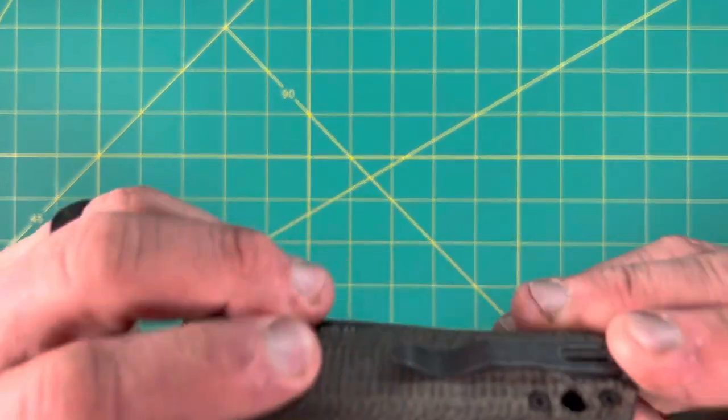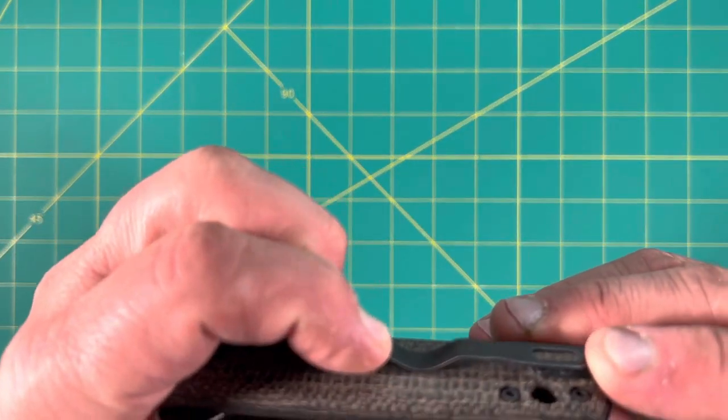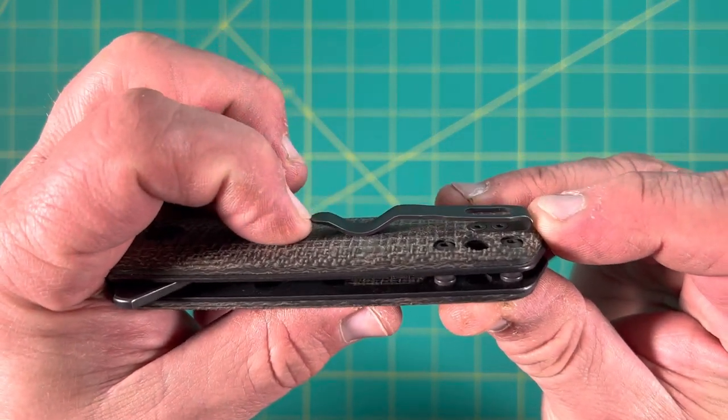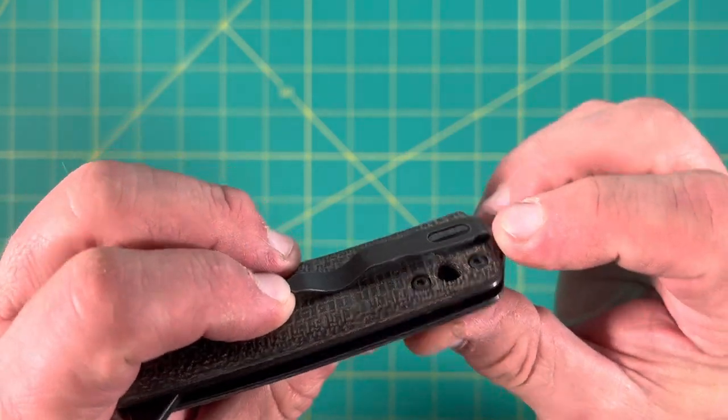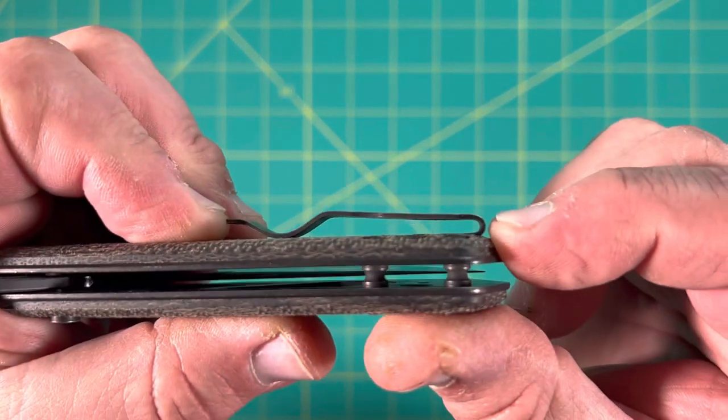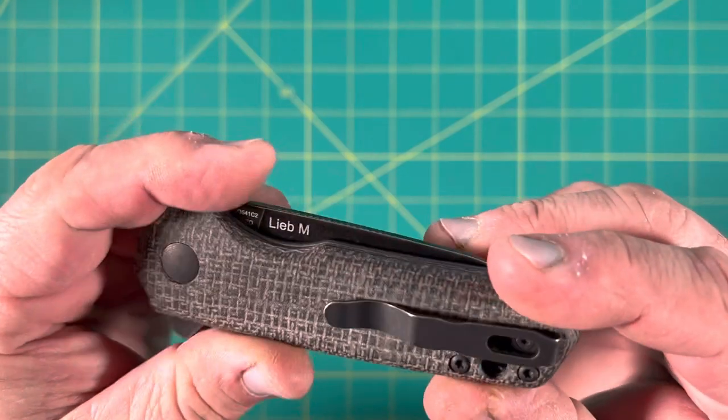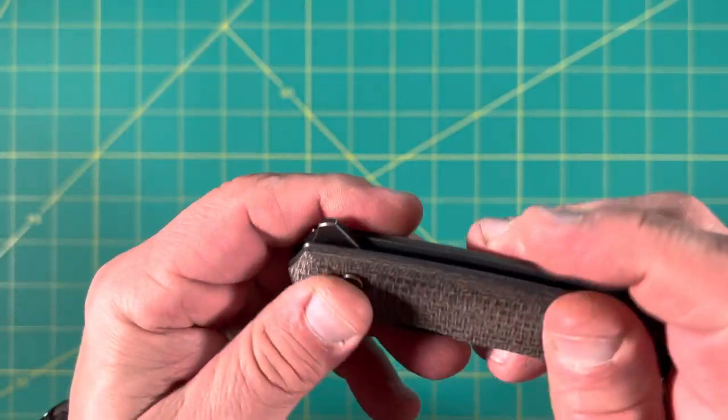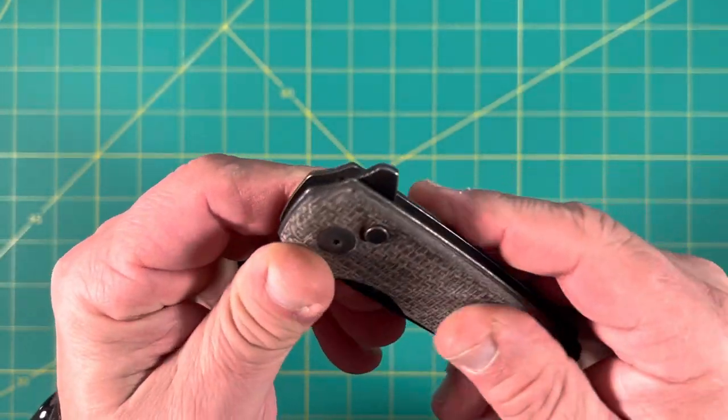But you can see it's black micarta. It's got a deep carry clip. That's pretty nice looking. That's a little straight. That might be a little challenge right there to get that over the pocket. But it does thin out a little bit up here. So we'll see if that makes it a little bit tight. Black micarta feels really nice. It's got some nice texture to it. Definitely can feel that.